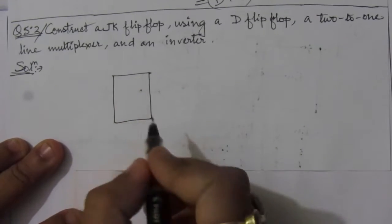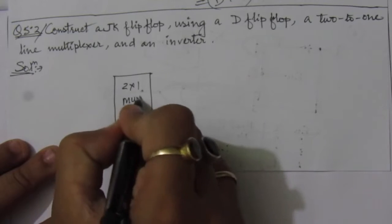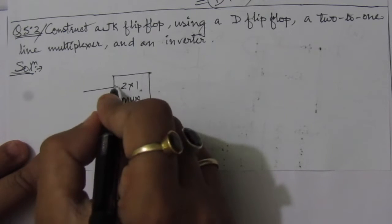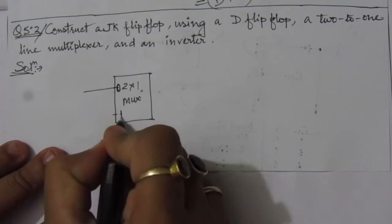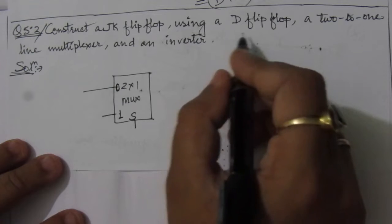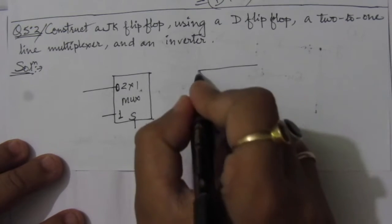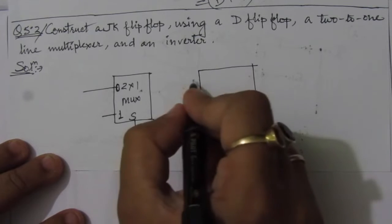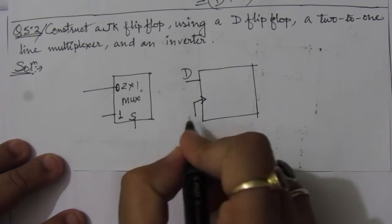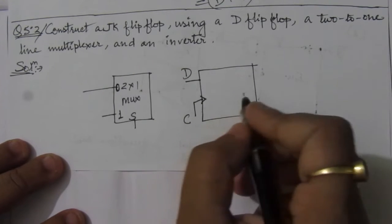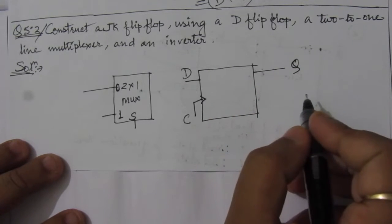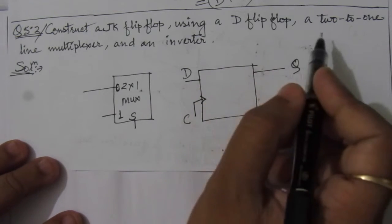First, let us draw the 2-to-1 multiplexer. This is the 2-to-1 multiplexer with two input lines: one port for I0 and another for I1. We have one select line S. For the D flip-flop, we have one D input line, one clock input C, an output Q, and an inverted output Q-bar.